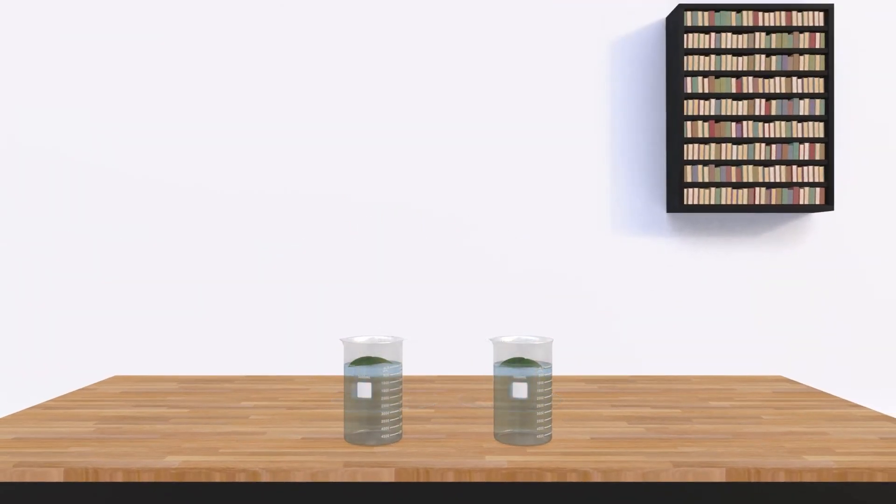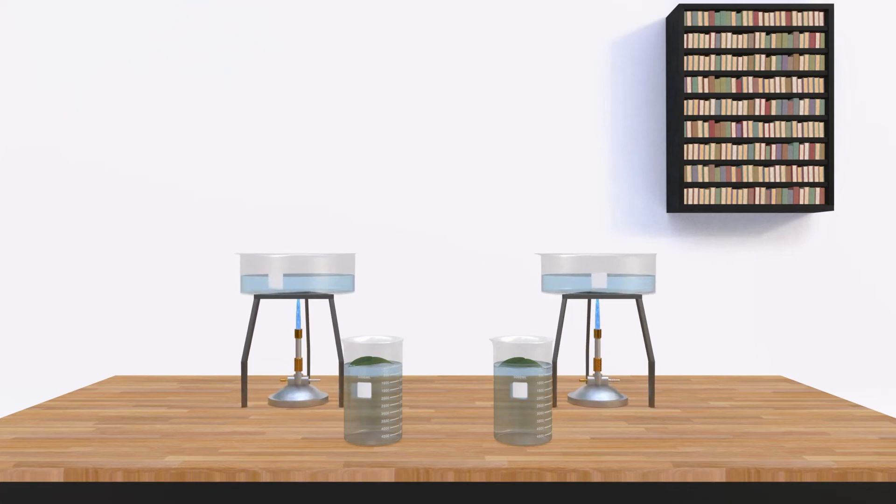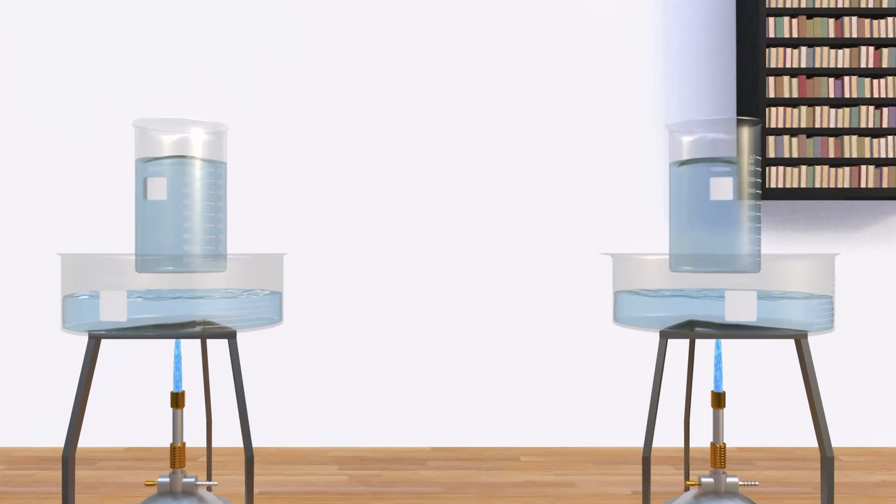Place each beaker in boiling water. The ethyl alcohol will decolorize the leaf by dissolving the chlorophyll in them.